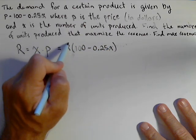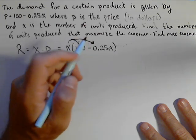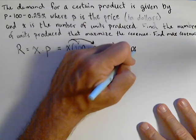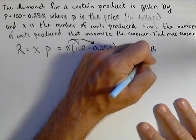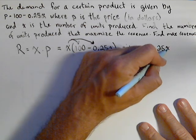Distribute the x, and you're going to see that we actually have a quadratic here, which equals 100x - 0.25x².